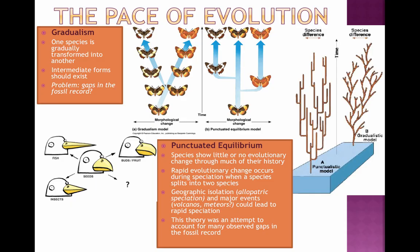Another way to look at evolution is to consider the difference between gradualism and punctuated equilibrium theory. Gradualism is the idea that species change over time very gradually and slowly, so we should expect to see many different intermediate forms. The evidence for this varies depending on the organism, but there have been a lot of missing pieces — transitional fossils that we should be finding but the fossil record hasn't fully provided.